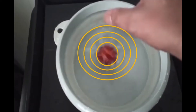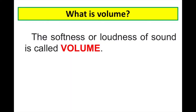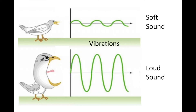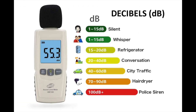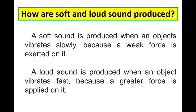It creates a big wave. It represents a loud sound. Volume is the softness or loudness of sound. It measures the amount of energy in sound waves. The amount of energy in a sound wave is measured in decibels. So, how do sound waves produce soft or loud sound?